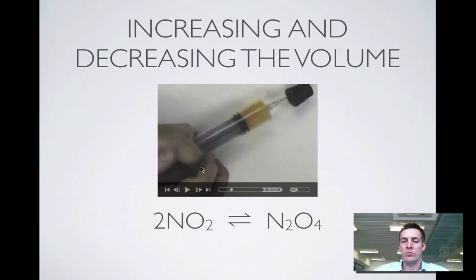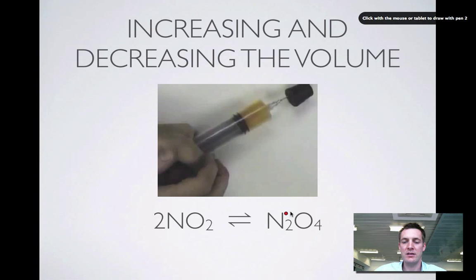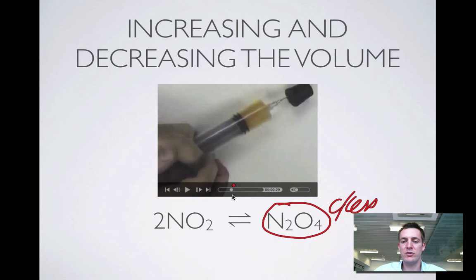As we've just seen, when we compress it, it gets suddenly darker, then the response is to get lighter. It's going over to the colorless side (N2O4). When we increase the pressure, we're favoring the forward reaction—it responds by going to the right. When we drop the